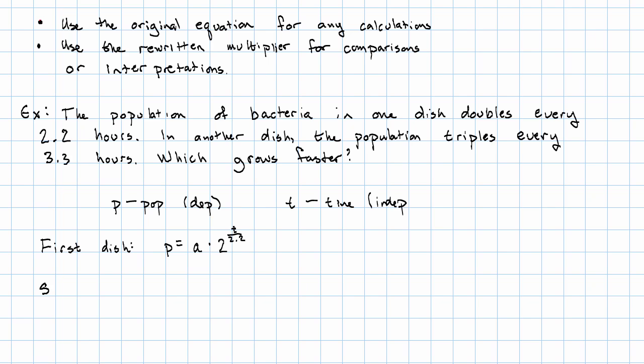In the second dish, our population is some starting value not necessarily the same. I'll call it B. But that population is going to be multiplied by three. How many times? Once every time three point three hours pass.